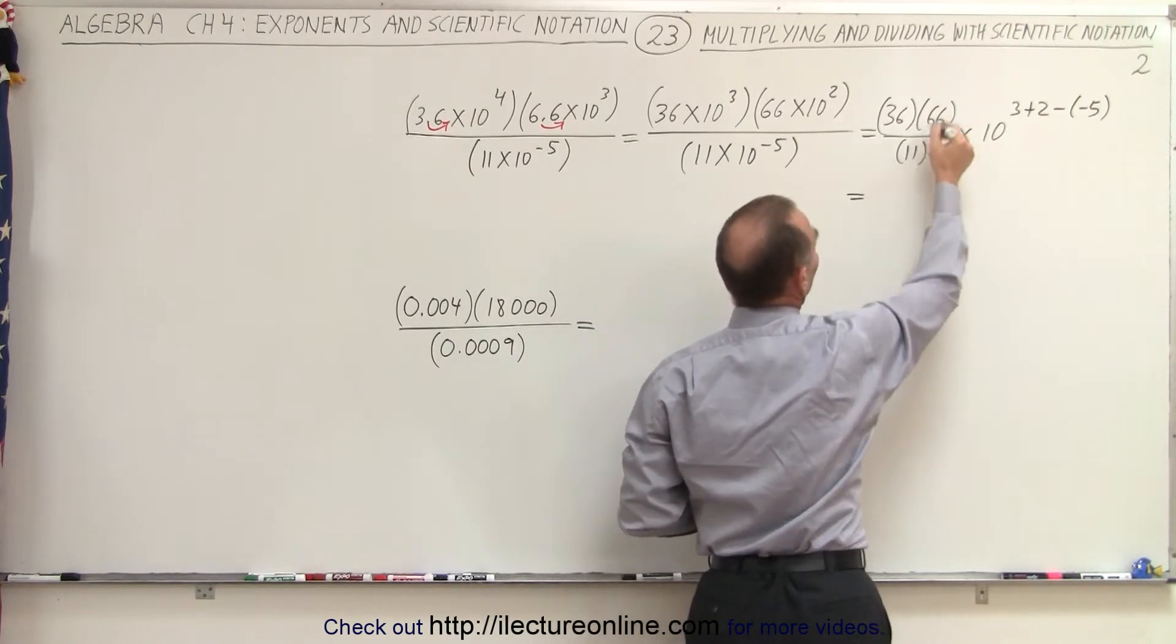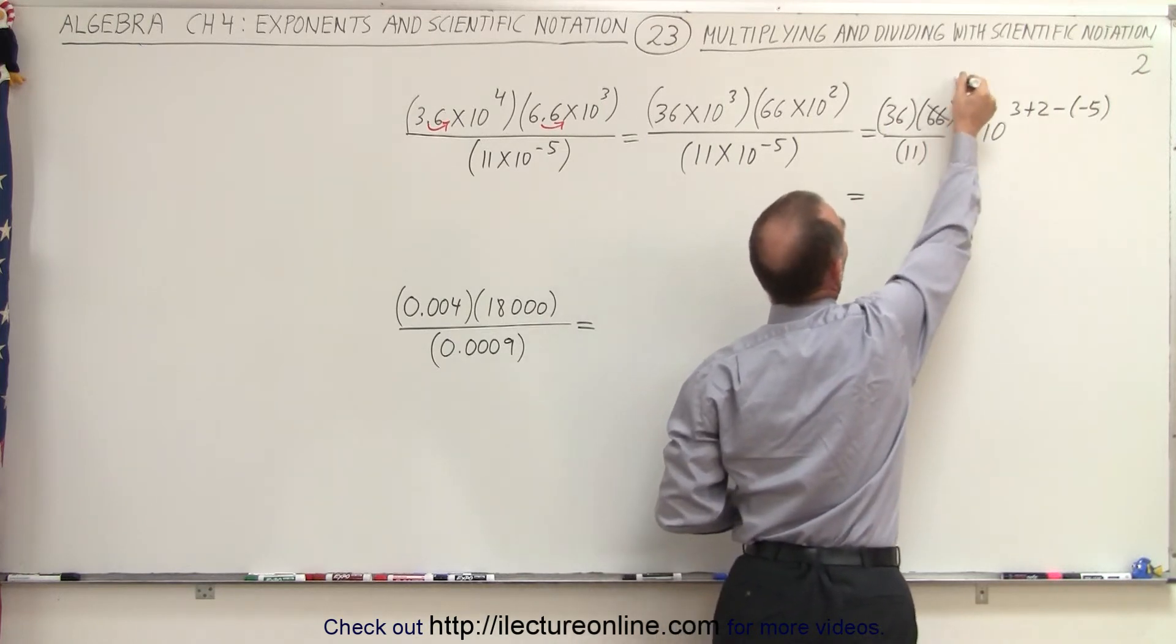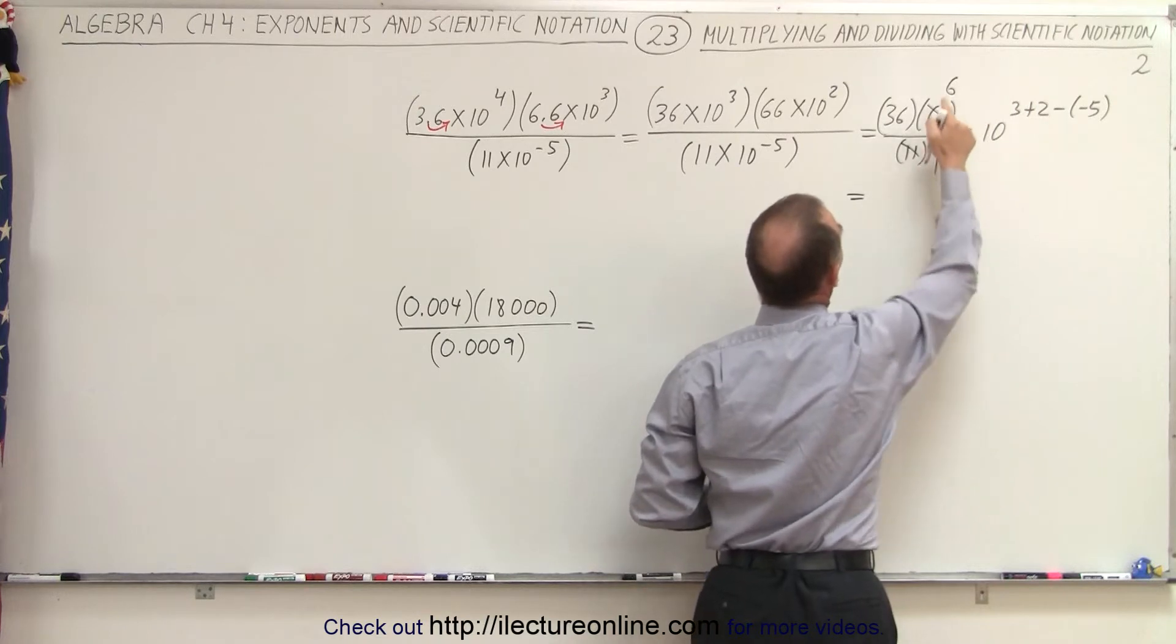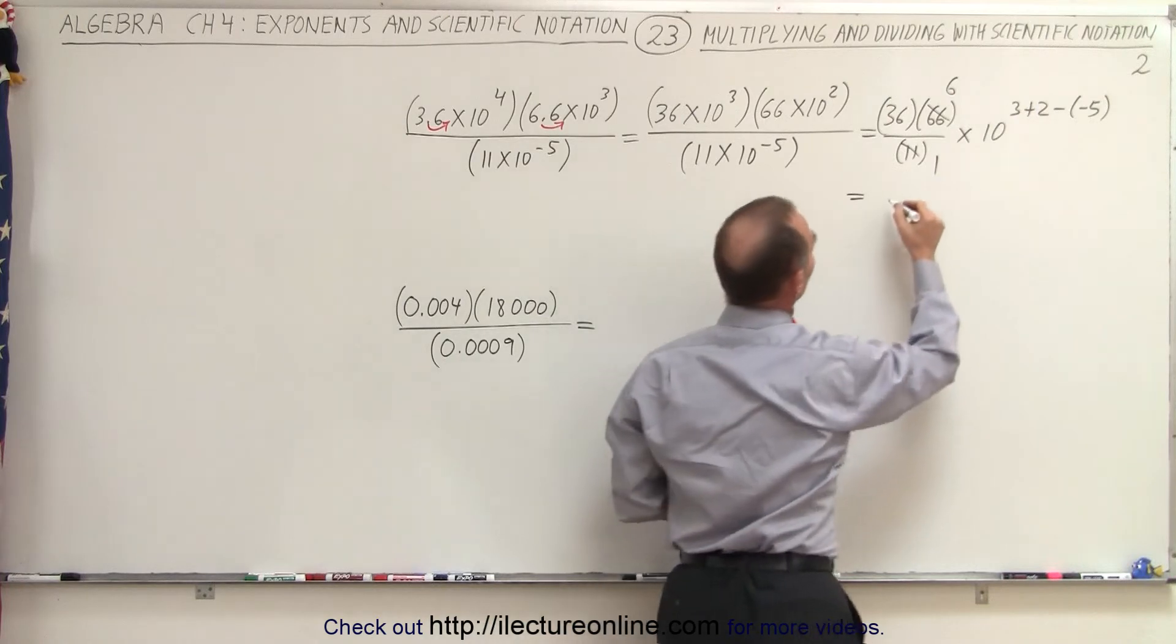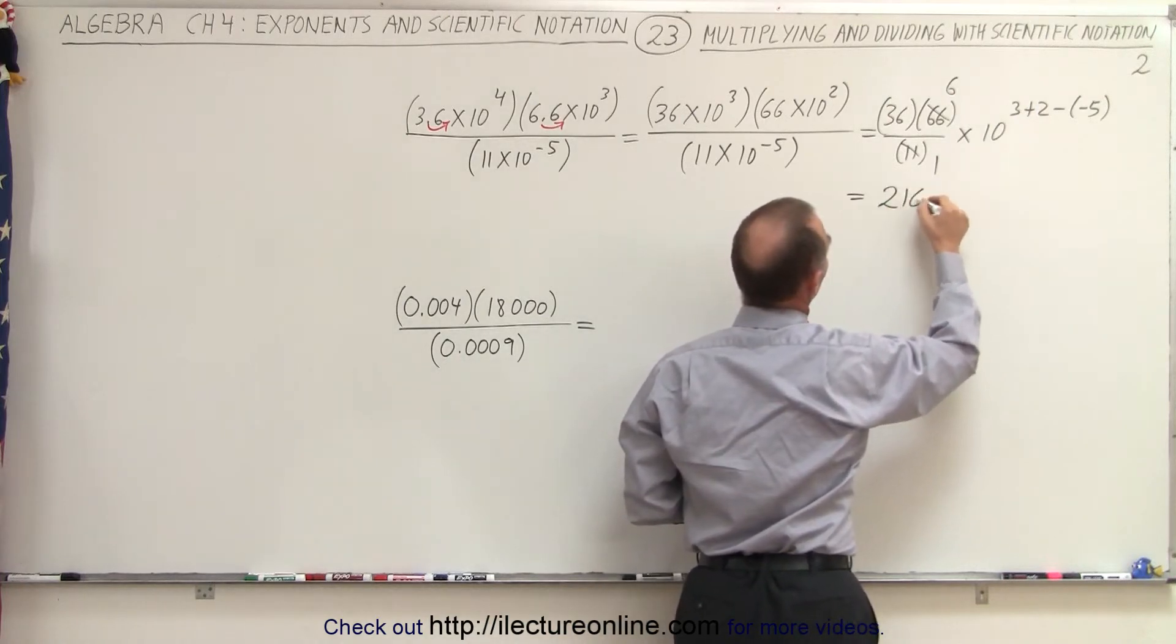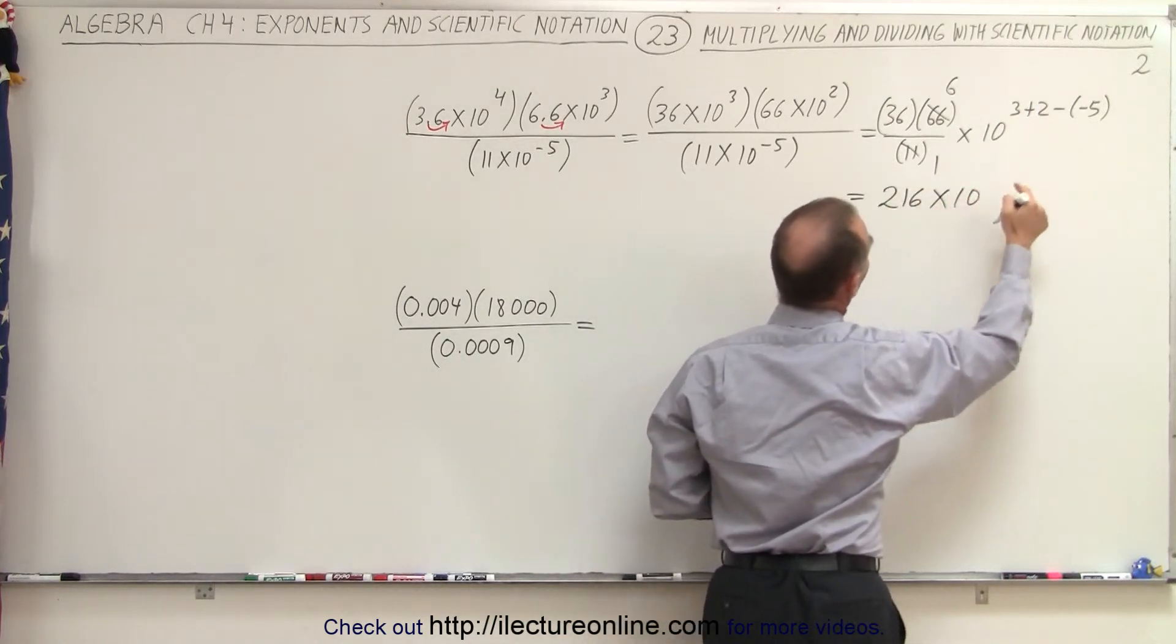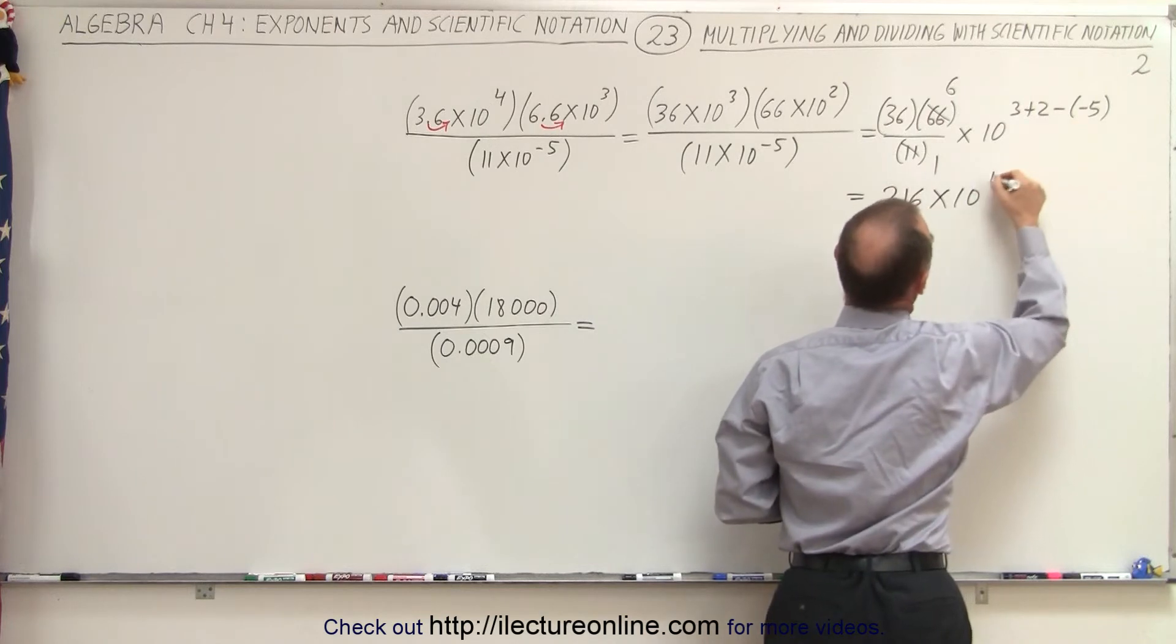Now we can see that the 11 goes into 66, 6 times. So that's 6, this is 1. And 6 times 36, that would be 180. That would be 216 times 10. 5 plus 5 would be 10.